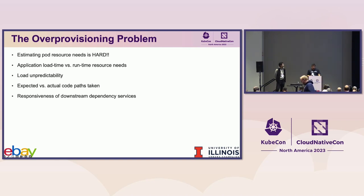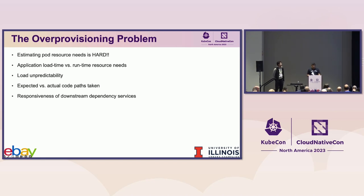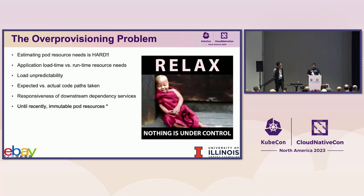You could get the provisioning right but still be subject to load shocks due to external factors such as other pods going down or the load balancer misbehaving. Your code may take slower paths due to varying nature of requests, and services you depend on may experience outages causing your service to get backed up. And even if you do everything right — profile your code with real traffic, use VPA recommender, perfectly tune the load balancer and HPA — as of today, K8s does not allow you to mutate your pod resources out of the box to deal with changes.